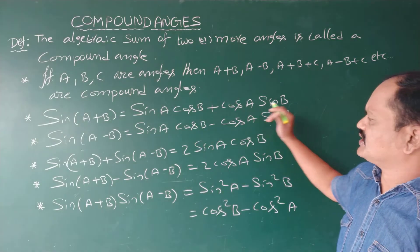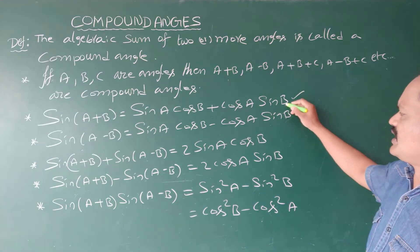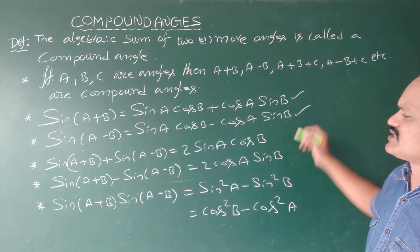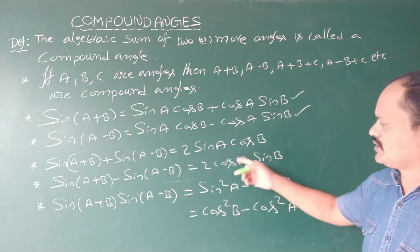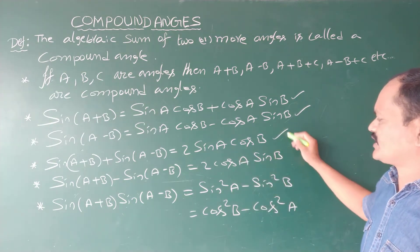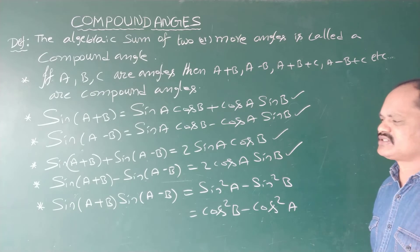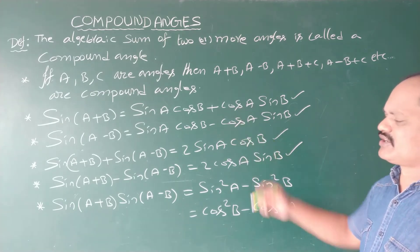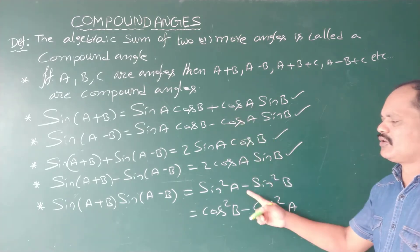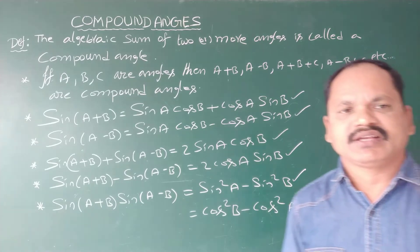So this is the sine expansion: sine A plus B expansion and sine A minus B expansion. Sum of the two expansions, difference of the two expansions — difference means the first one minus the second one. Product of these two expansions.